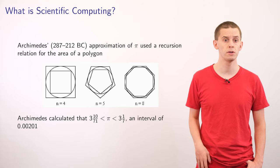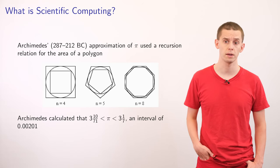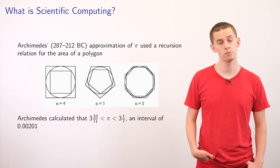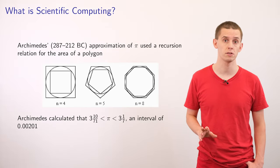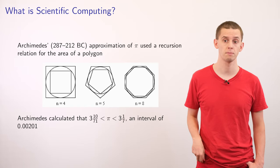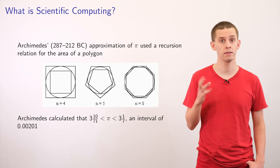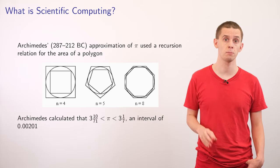Archimedes made a number of important advancements in the calculation of pi. He was able to approximate pi by using inscribed and circumscribed regular polygons of different numbers of sides.